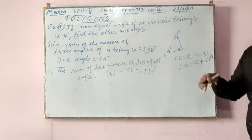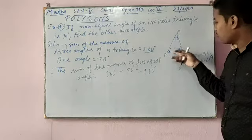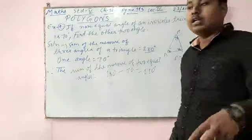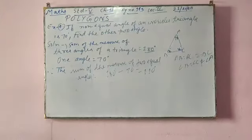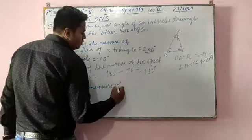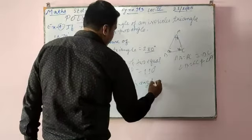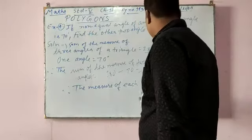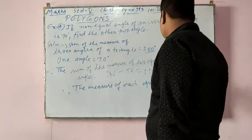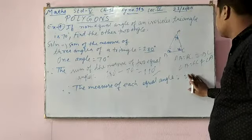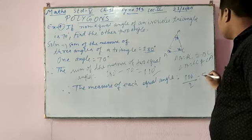These two equal angles together sum to 110 degrees. We know their sum is 110 degrees, but we have to find each angle individually. Therefore, the measure of each equal angle will be 110 divided by 2, which equals 55 degrees.